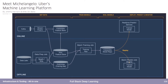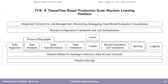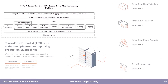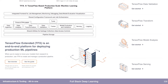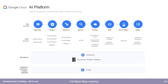Uber quickly followed up with Michelangelo, their machine learning platform. Google published TensorFlow with TFX — a TensorFlow-based production-scale machine learning platform — which was a paper for a couple of years and is now the backbone for Google Cloud Platform's TFX. TFX has tools for data validation, transforming data, analyzing models, and serving the model. The Google Cloud AI Platform has the same flow: ingesting data, processing data, developing, training at scale, testing, and deploying.